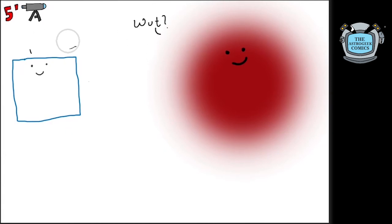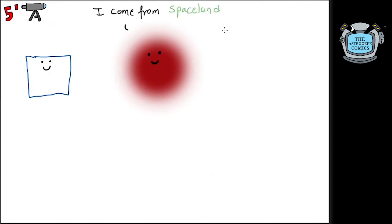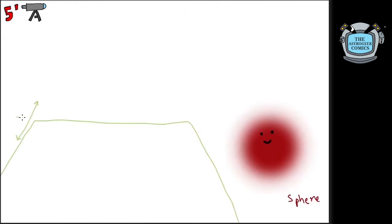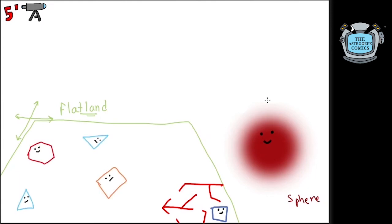The square could not fathom the existence of directions like up and down and thought the sphere, which looked like a circle in 2D, was just some aristocrat trying to fool him. Since the sphere could move upwards from the 2D flatland, it could rise above and out of the view of the square and everything in the flatland.